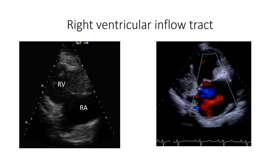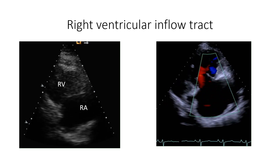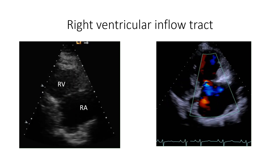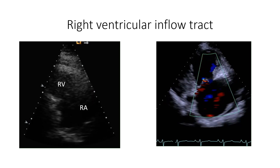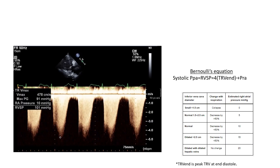This is the right ventricular inflow tract in the long axis view. Here you can visualize the right ventricle and the right atrium. The tricuspid valvular apparatus is also seen. This view allows us to visualize the tricuspid velocity and provides an assessment of right ventricular systolic function. Tricuspid velocity is the difference in pressure between the right ventricle and the right atrium. When pulmonary stenosis is absent, the right ventricular systolic pressure is assumed equal to the systolic pulmonary artery pressure, calculated using Bernoulli's equation with estimated right atrial pressure from the inferior vena cava diameter.